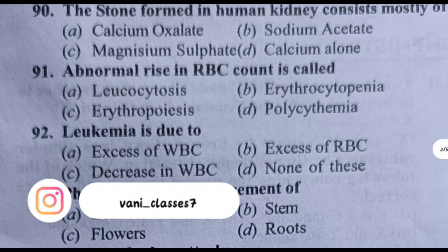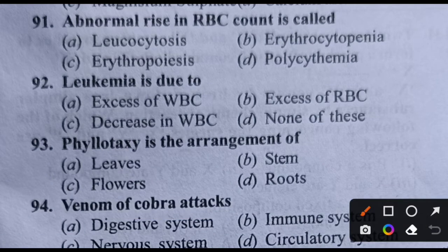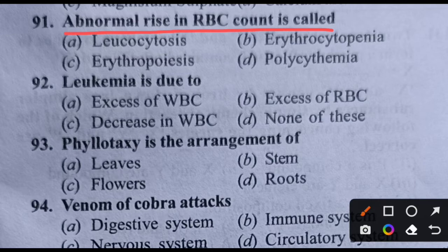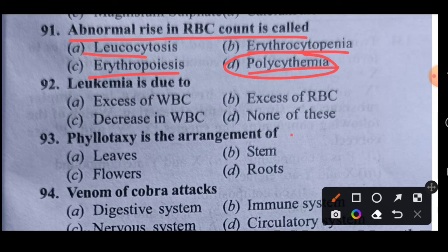The stone formed in human kidney is called calcium oxalate. Question number 91: Abnormal rise in RBC count — if the RBCs are more than the limit, what is that condition called? Options: leukocytosis, erythrocytopenia, erythropoiesis, or polycythemia. This condition is called polycythemia.